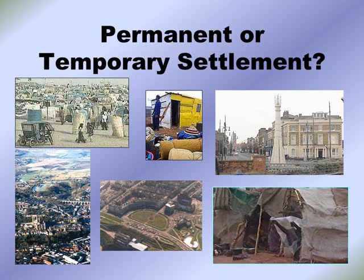In a permanent settlement, people build permanent houses. In the course of time, several such structures are constructed and a settlement develops. The availability of water and land for cultivation are important reasons for the growth of such settlements. In addition, there is availability of communication lines such as roads and railways, and other facilities such as a police station, post office, hospital or health center, and a market.